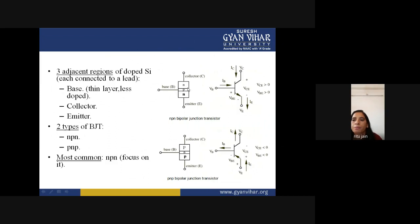When you combine two diodes you get either an NPN or a PNP transistor. There are two types of transistor: NPN and PNP. N-type has a large number of electrons and P-type has a large number of holes. Both types have three terminals: base, collector, and emitter.